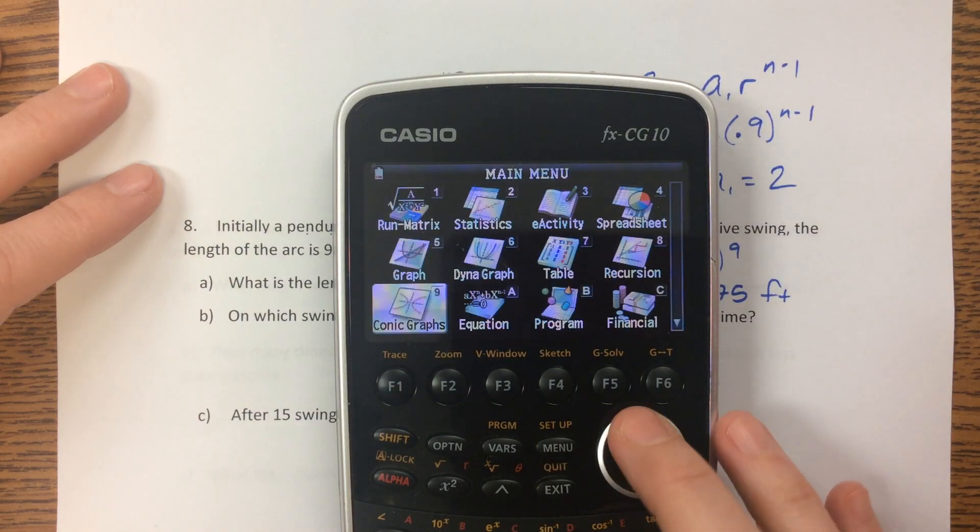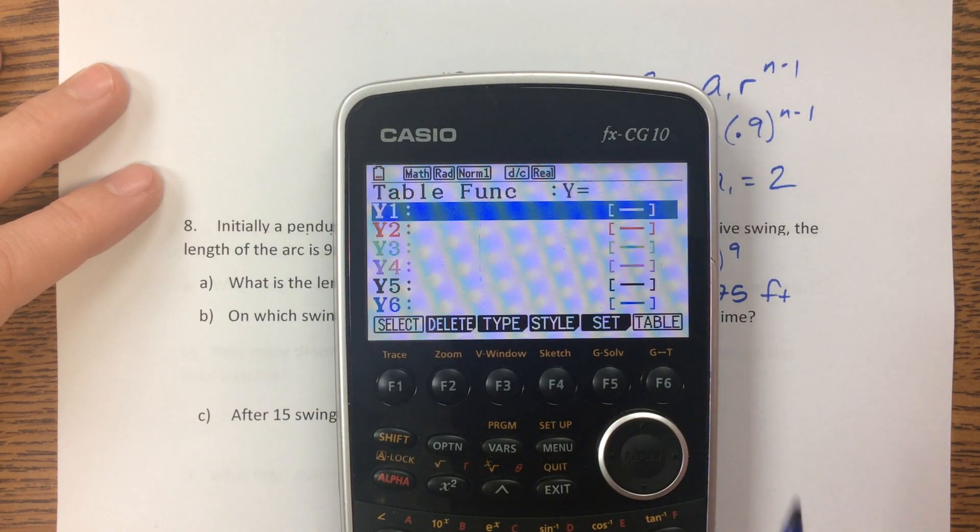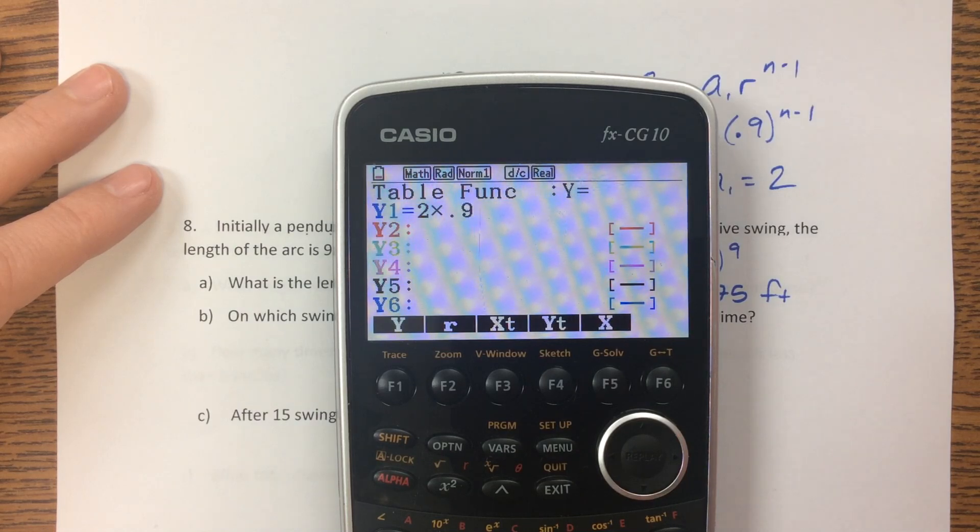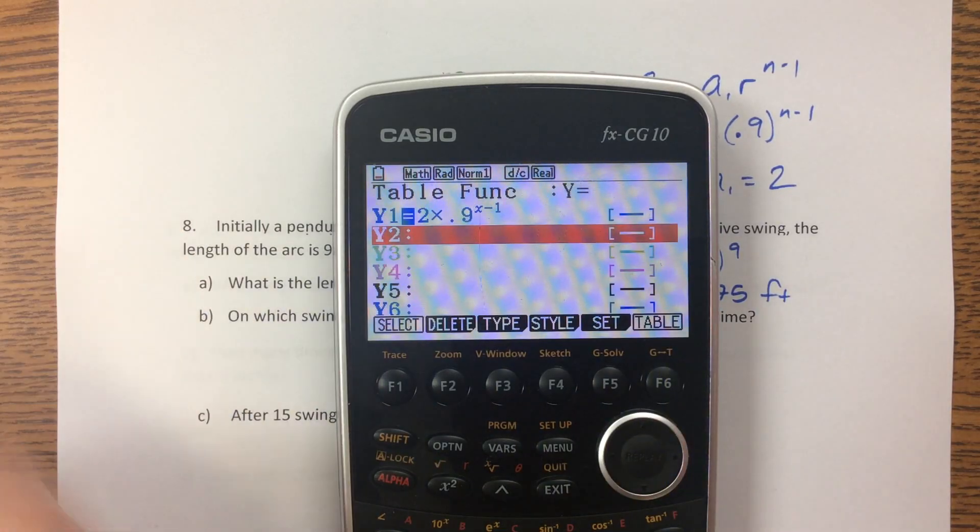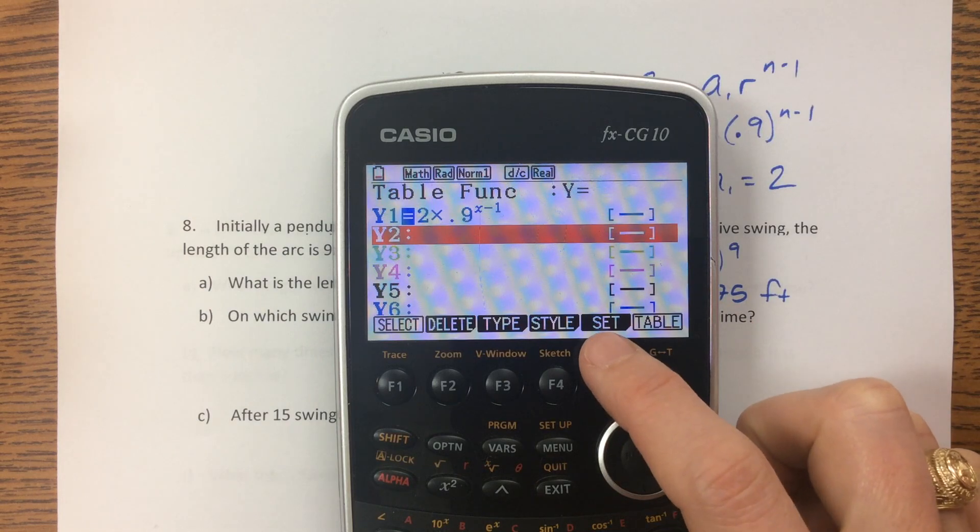So when I hit menu, I'm going to come down to table. And we typed in 2 times 0.9 raised to the x minus 1. Before I go to the table, I'm going to go set the table.